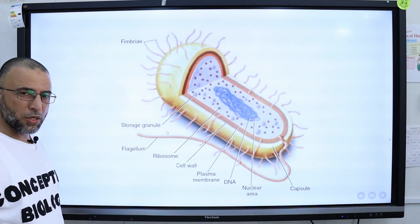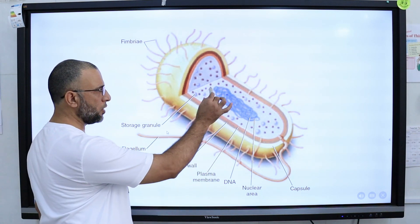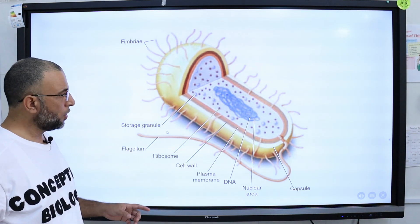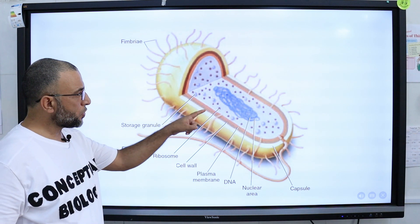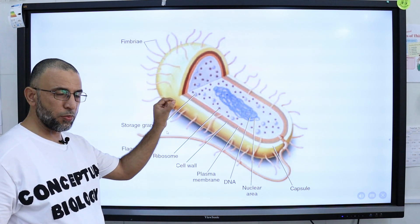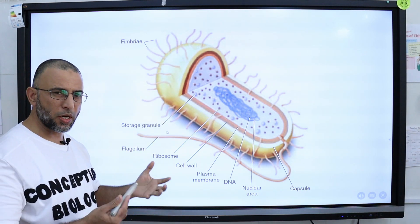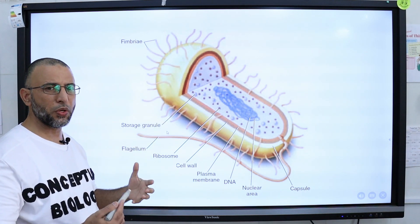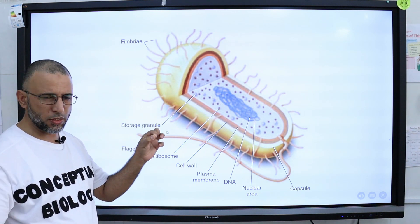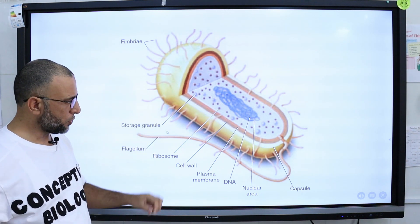This is a bacterial cell, which is a prokaryotic cell. DNA is directly present in the cytoplasm with no nucleus, and ribosomes are present directly in the cytoplasm. These ribosomes, present in bacteria, are called bacterial or prokaryotic ribosomes because they are slightly smaller in size compared to eukaryotic ribosomes.